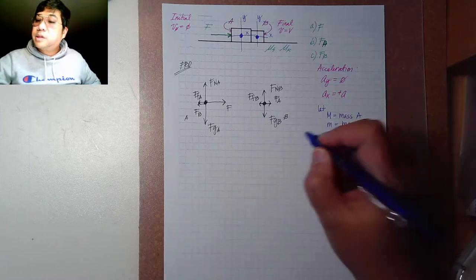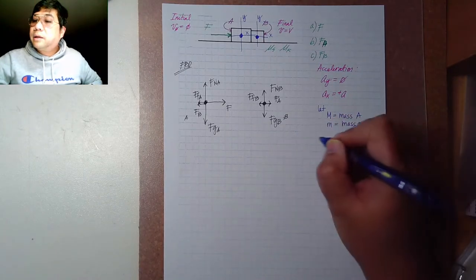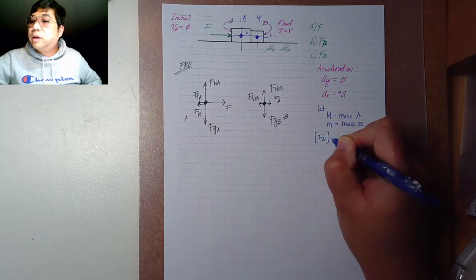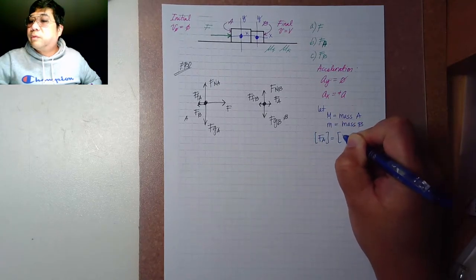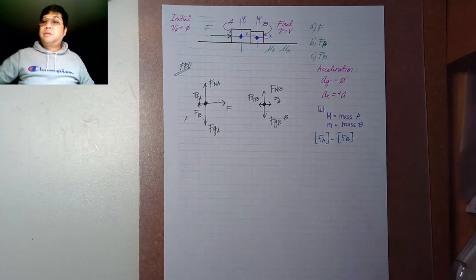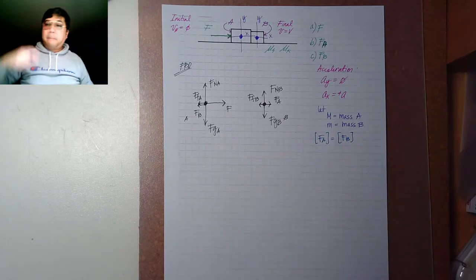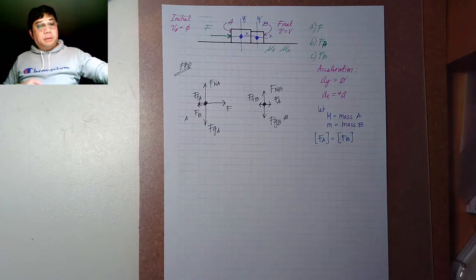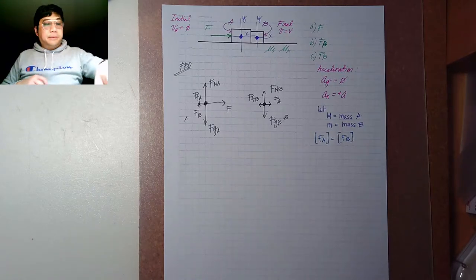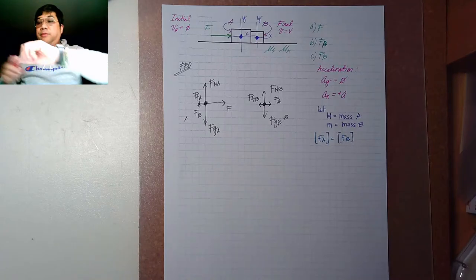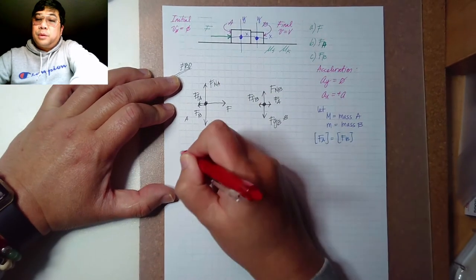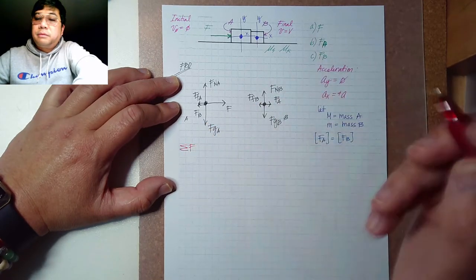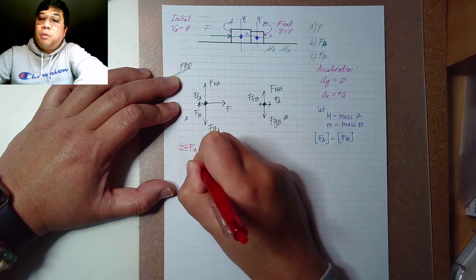The magnitude of the force on A is equivalent to the magnitude of the force on B, as indicated by Newton's third law of motion. Now let's analyze the applied forces by doing the summation of forces.